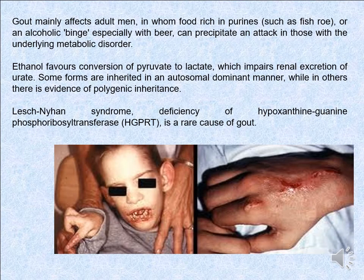Gout especially affects adult men, in whom foods rich in purines — such as fish or offal — or excess alcohol, especially beer, can precipitate an attack in those with underlying metabolic disorders. Ethanol promotes conversion of pyruvate to lactate, which impairs renal secretion of urate. Some forms are inherited in an autosomal dominant manner, while in others there is evidence of polygenic inheritance. Lesch-Nyhan syndrome — deficiency of hypoxanthine-guanine phosphoribosyltransferase (HGPRT) — is a rare cause of gout.